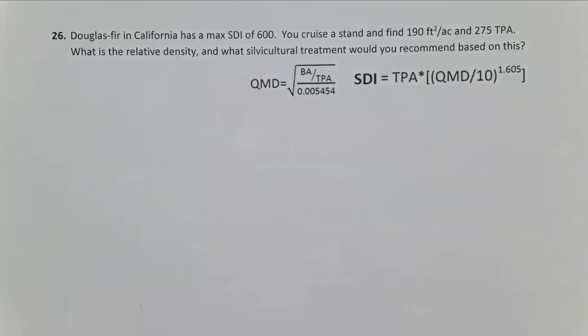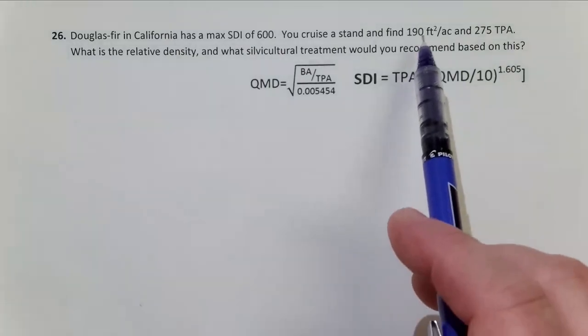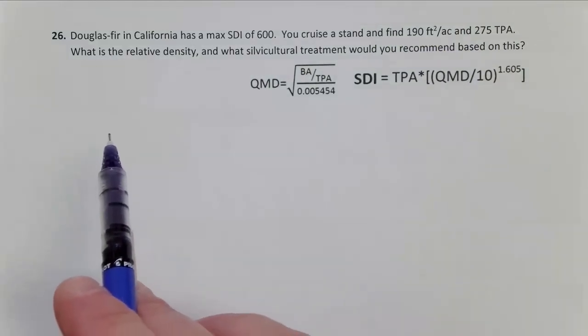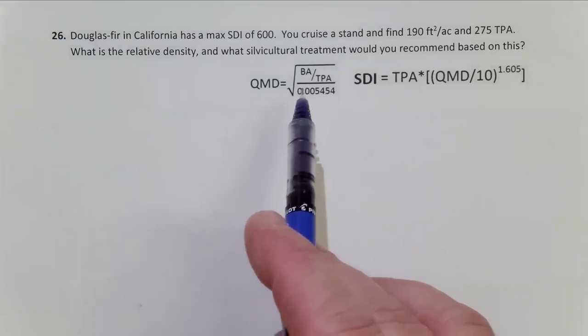And here it's the same problem we've been doing in problems 25 and 23, except here you'll see that we have basal area and trees per acre, but we do not have QMD, and we know we need QMD for the SDI equation. So let's look at our initial step to calculate QMD.